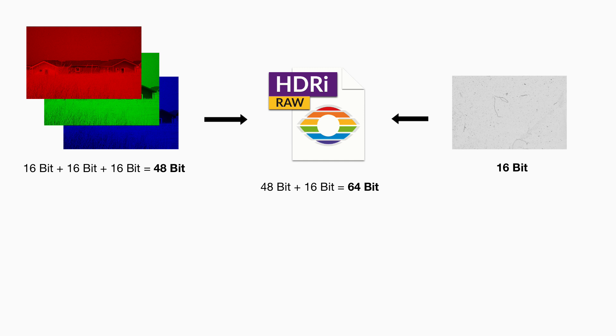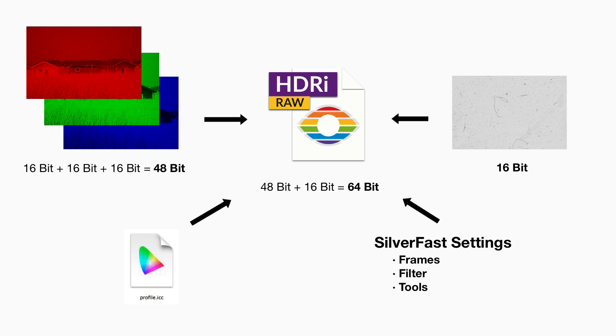In addition to the image data, HDRI RAW files contain the ICC profile of the scanner and Silverfast settings for frames, filters, and tools.